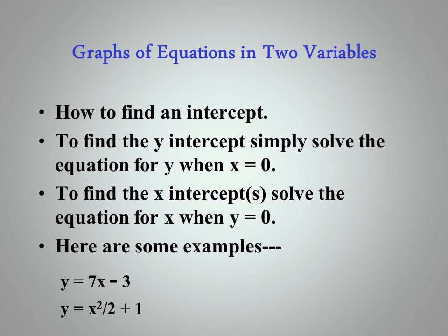Graphs of equations in two variables. How to find an intercept. To find the Y-intercept, simply solve the equation for Y when X equals 0. To find the X-intercepts, solve the equations for X when Y equals 0. Here are some examples. Y equals 7X minus 3, and Y equals X squared over 2 plus 1.